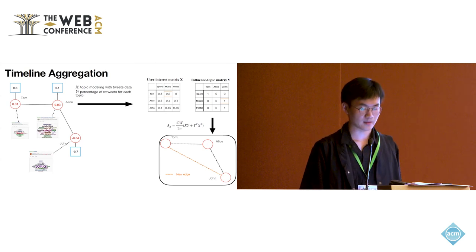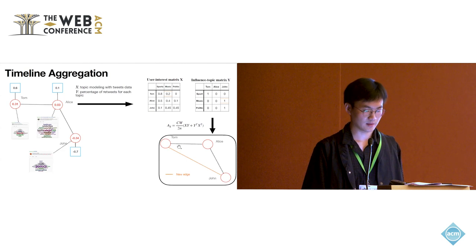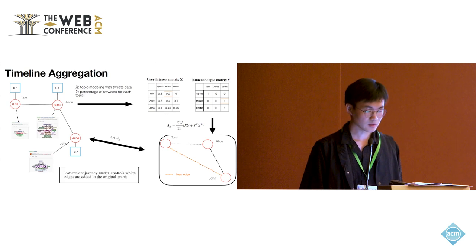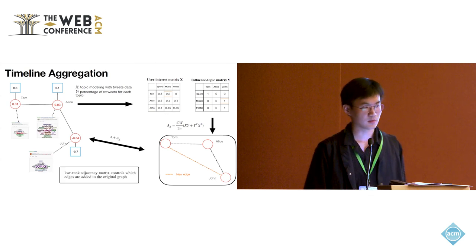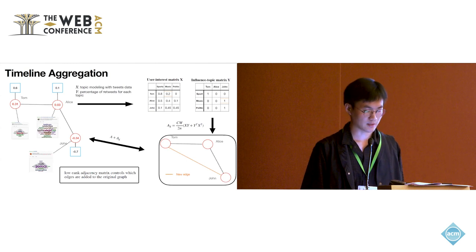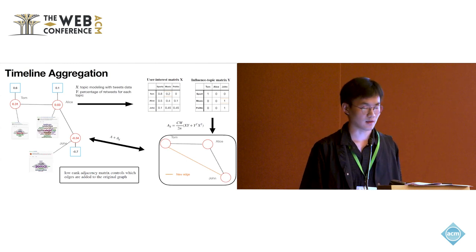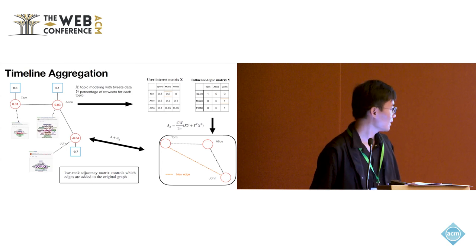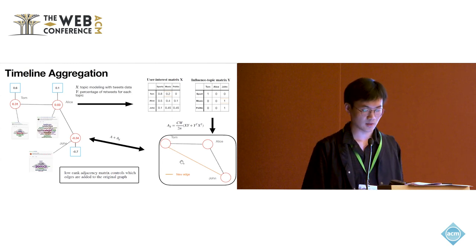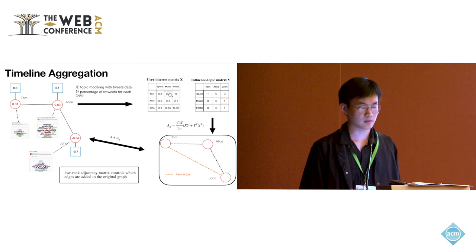If we add this AX into the original graph, this means we could use the low-rank matrix AX to control which edges are added into the original graph. As the picture shows here, there is a new edge between Tom and John, which was created by the common interest of music and the influence of John in music.